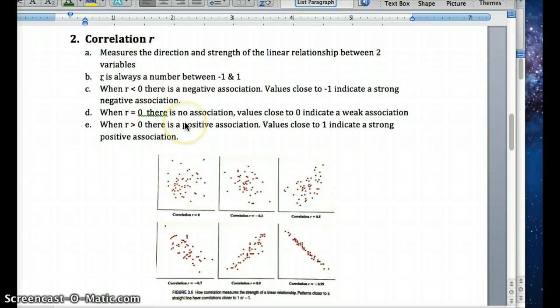When R is 0, there's no association. Values close to 0 would be a weak association. And values close to 1 would be a strong positive association. Close to negative 1 would be a strong negative association.